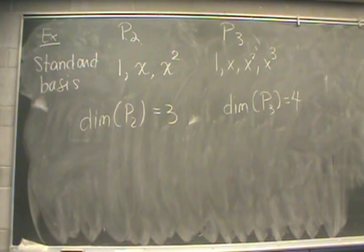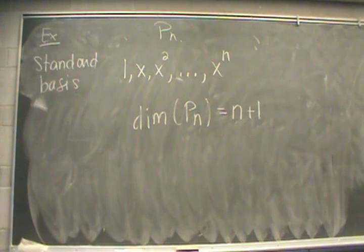If we upgrade and go to P_3, now we have four polynomials that form the standard basis: 1, x, x^2, and x^3. And the dimension of P_3 will equal 4. If we generalize this idea to the real vector space P_n, we have 1, x, x^2, and we keep going until we get to x^n. And this yields that the dimension of P_n is equal to n+1. We have n polynomials that have powers of x, and then we have that constant polynomial. So that's where the plus 1 comes from.